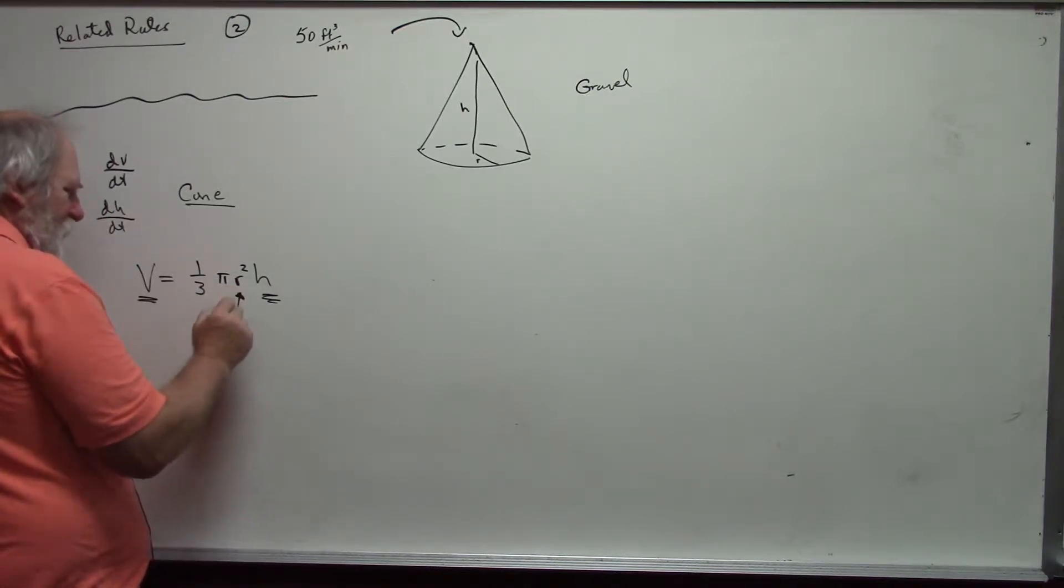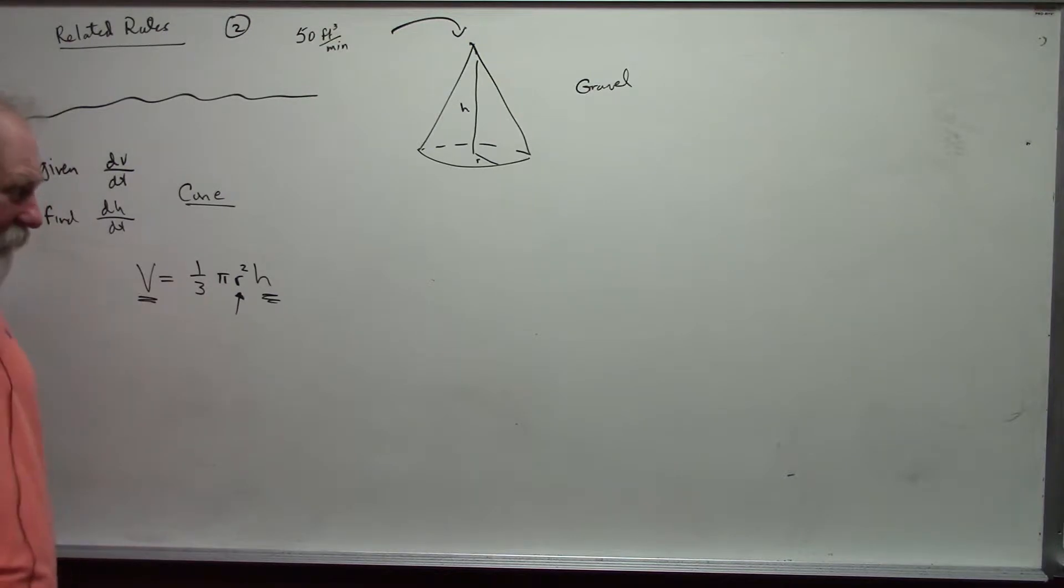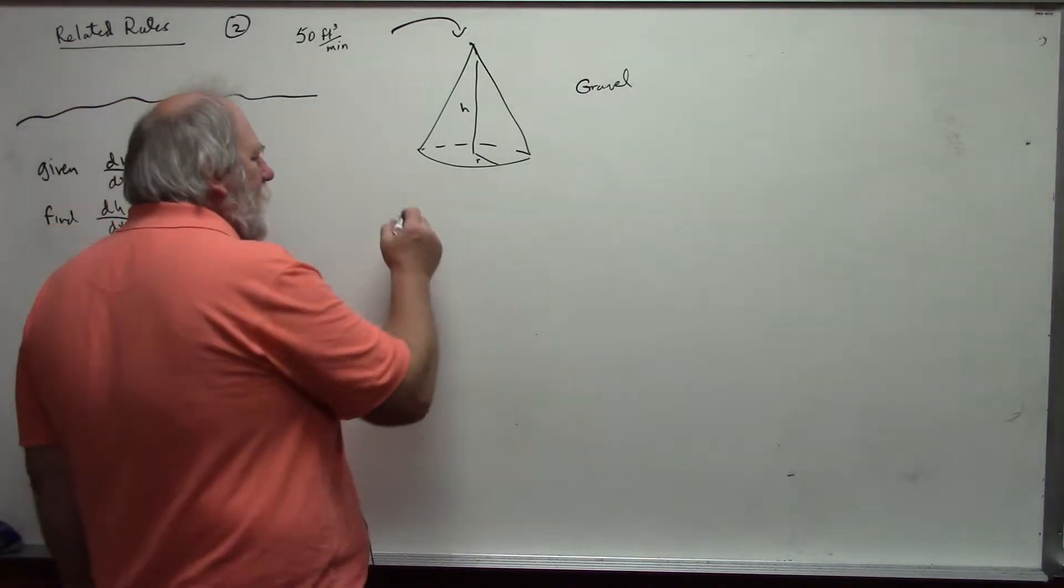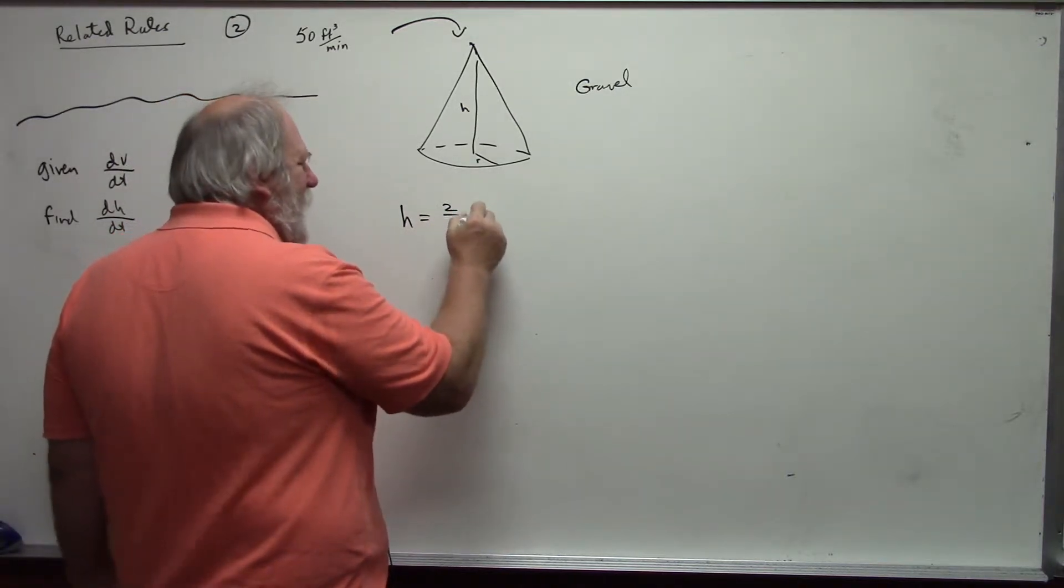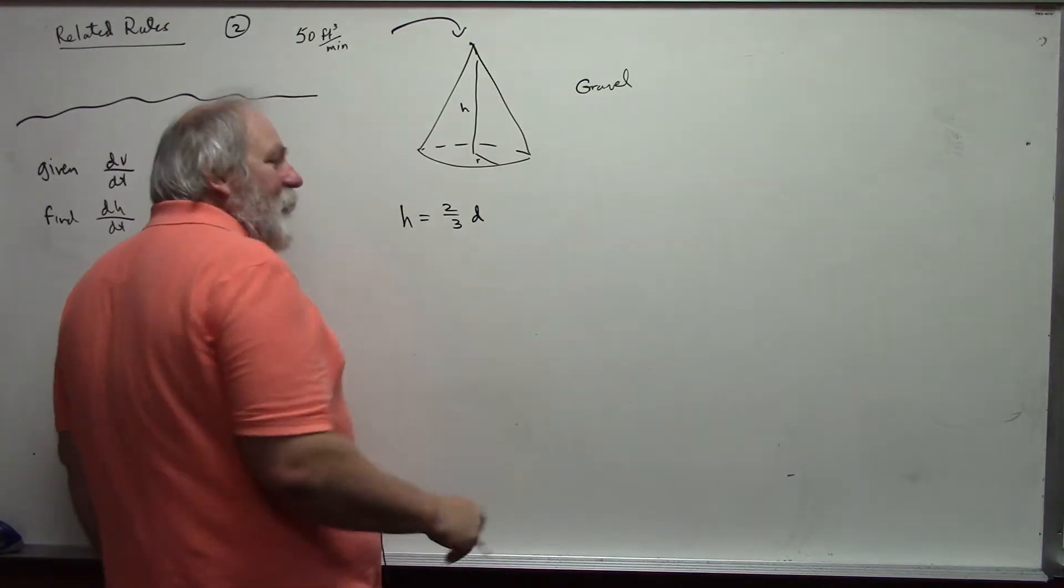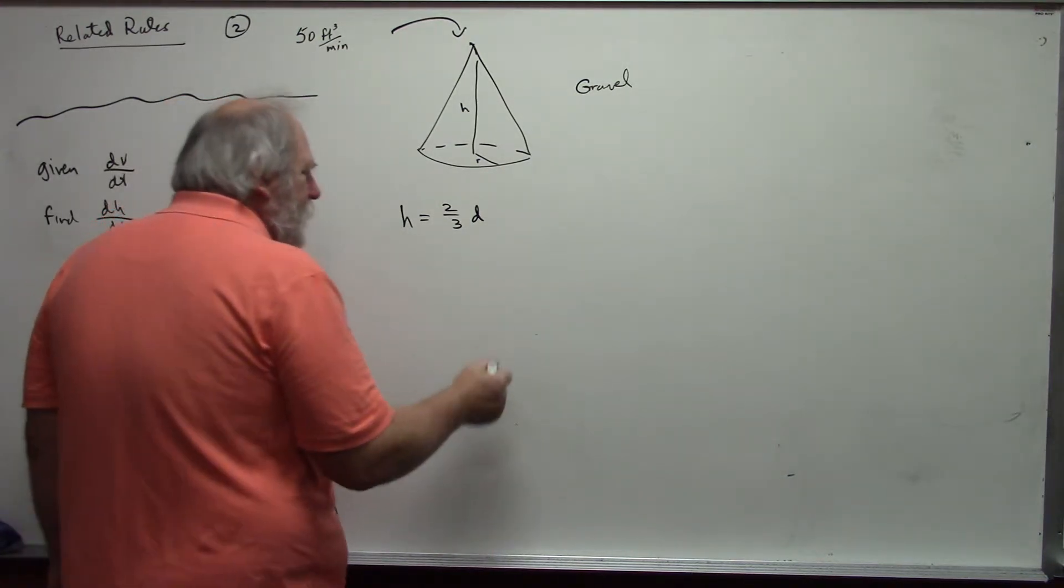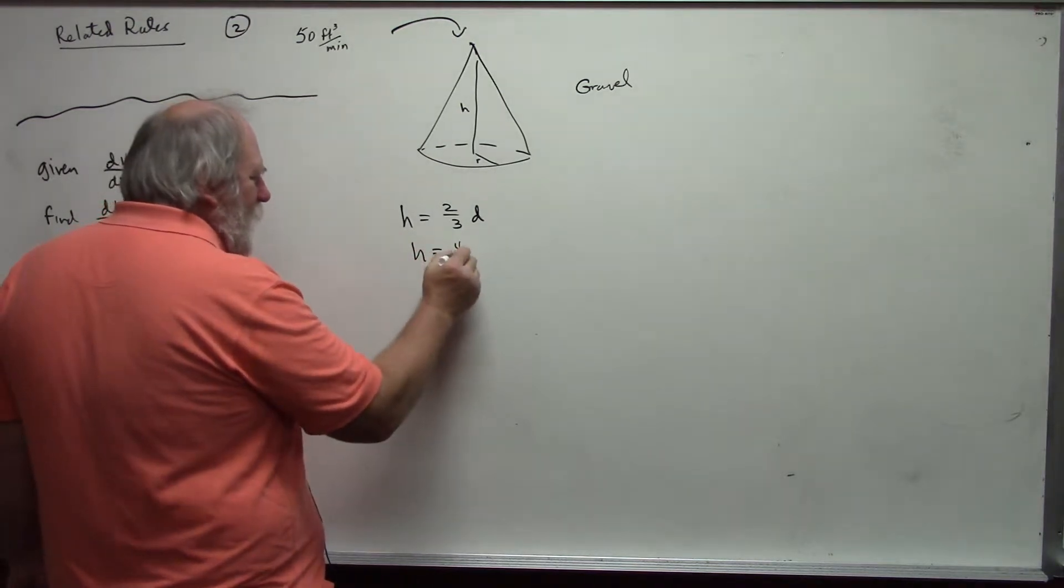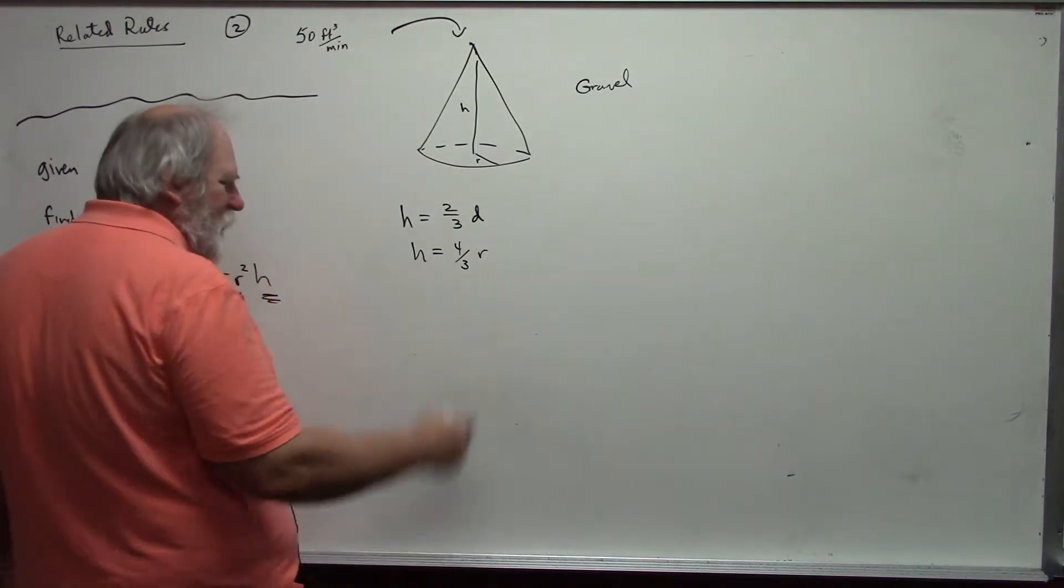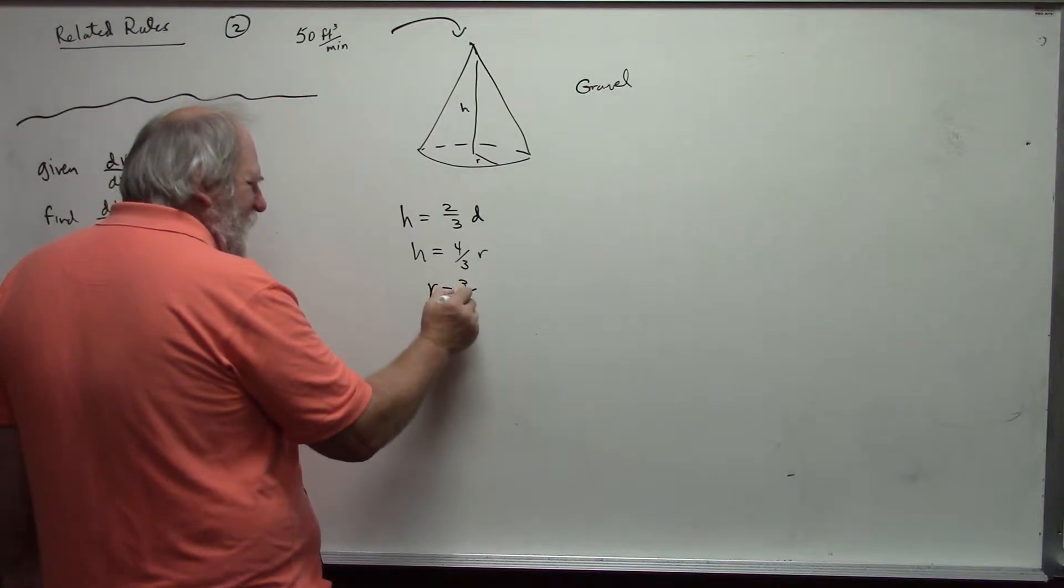This other variable we need to eliminate. We have to get rid of that variable. We are told in the problem that the height is always two-thirds the base diameter. And, of course, the diameter of a circle is twice the radius. And so, the height then is four-thirds the radius, which means that the radius is three-fourths of the height.